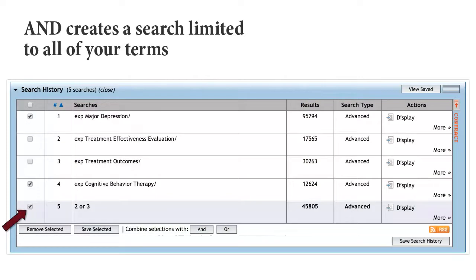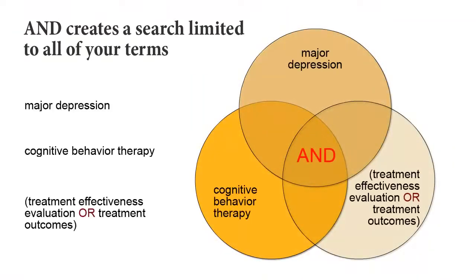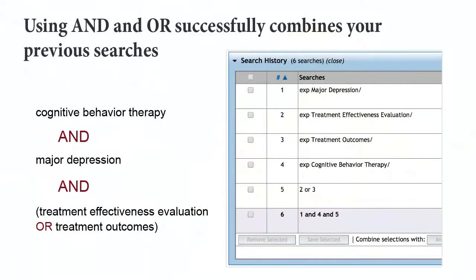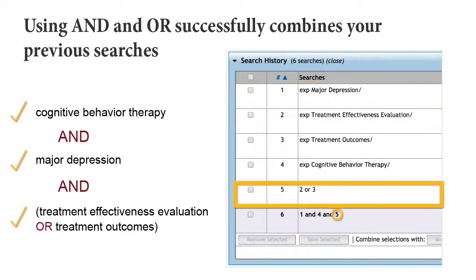Next, we will combine the treatment effectiveness evaluation or treatment outcome results with the other two sets of results, and for this search we will combine the sets using AND. When we combine the sets together using AND, we only retrieve those articles that include all of the terms. We now have a search about cognitive behavior therapy and depression and treatment effectiveness evaluation or treatment outcome.